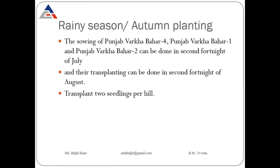For planting in the rainy season, a few varieties are suitable: Punjab Varkha Bahar Core, Punjab Varkha Bahar 1, and Punjab Varkha Bahar 2. Their nursery sowing can be done in the second fortnight of July and transplanting in the second fortnight of August. At the time of transplanting, we have to transplant two seedlings per hill, so that if one seedling dies the other will grow.